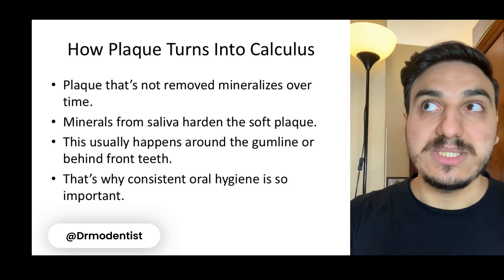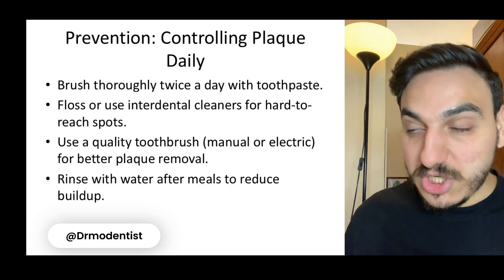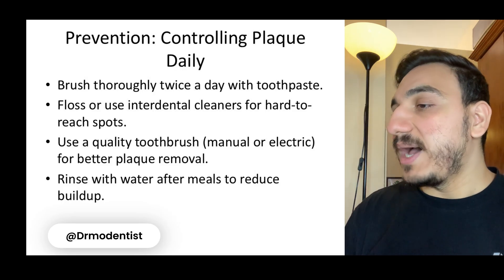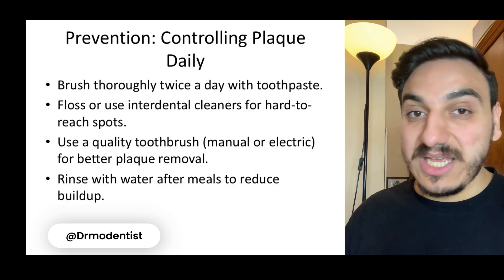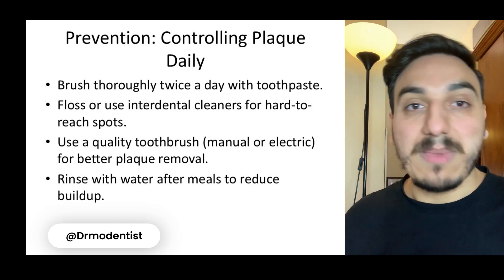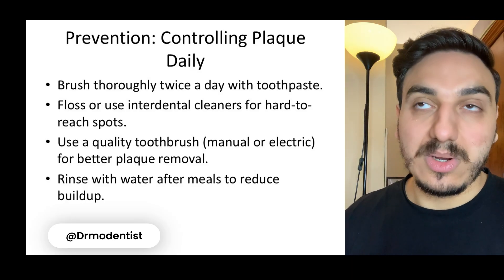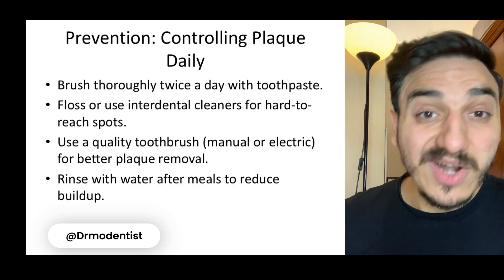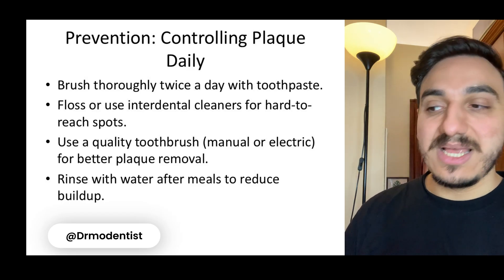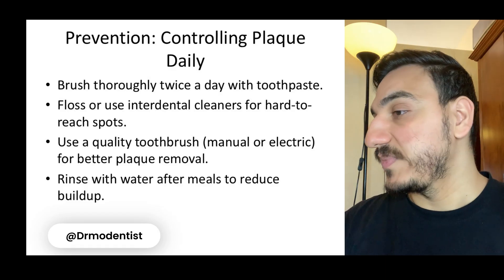What about prevention? Why wait for a problem to happen when we can try to prevent it in the first place? Controlling plaque daily means brushing twice a day with toothpaste, flossing, and using interdental cleaners — which are simply a means of cleaning between the teeth. Using a quality toothbrush, manual or electric, is also important. I made a video about a relatively budget-friendly electric toothbrush you can check out on my channel. Also, rinse with water after meals to reduce buildup — it's a good idea to wait about 30 minutes after a meal before brushing.